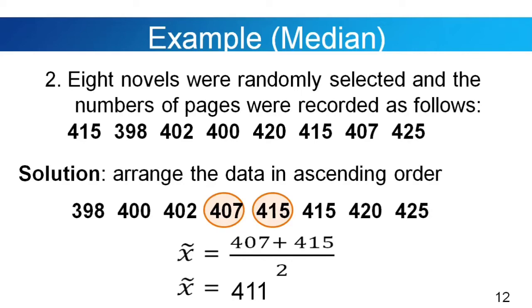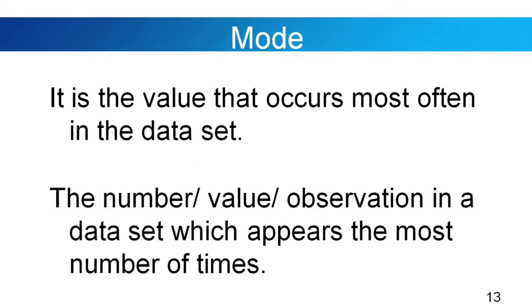Please take note of this when we have an even number of values in our data set. Let's go to the last measure of central tendency, and that would be the mode. The mode is the value that occurs most often in the data set — the number or observation that appears the most number of times.